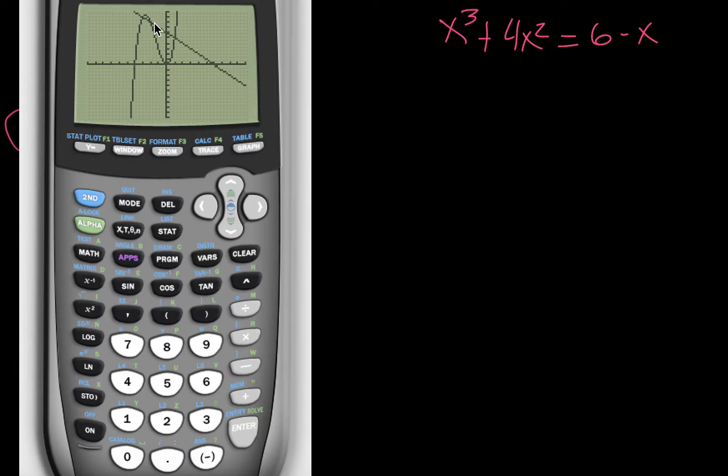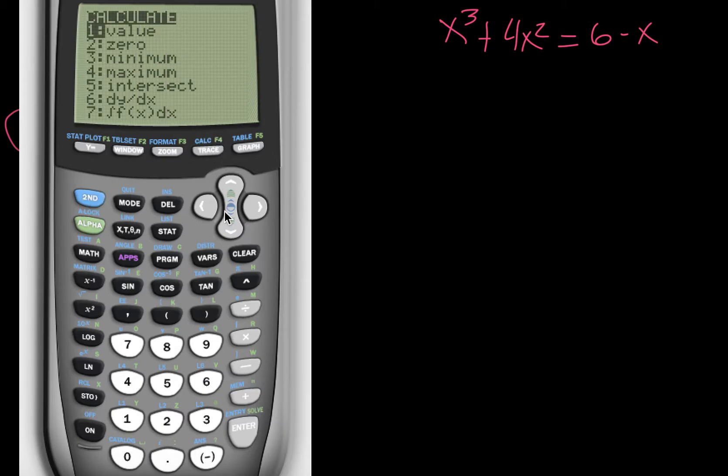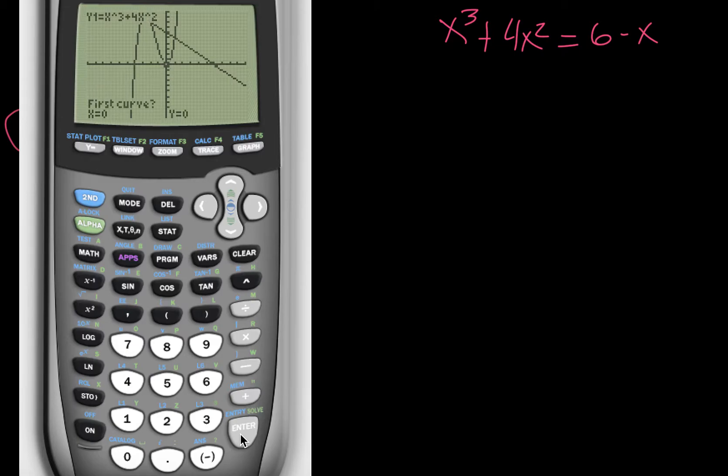Alright, so it looks like it crosses three different places. So we're going to have to go second, calc, intersect. And since we only have two curves on there, we can just go enter, enter, because we know it's going to get both of them. And I'm actually going to start, whoops, I don't know what just happened.